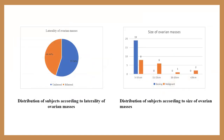Distribution of subjects according to laterality of ovarian masses: 55 percent of cases were unilateral and 44 percent were bilateral. Distribution of subjects according to size of ovarian masses: most cases were between 5 to 10 centimeters, of which 19 cases were benign and eight cases were malignant.